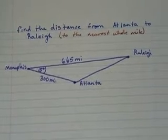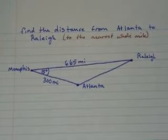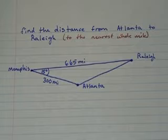So given this diagram, we've been asked to find the distance from Atlanta to Raleigh to the nearest whole mile. We have Memphis, Raleigh, and Atlanta.